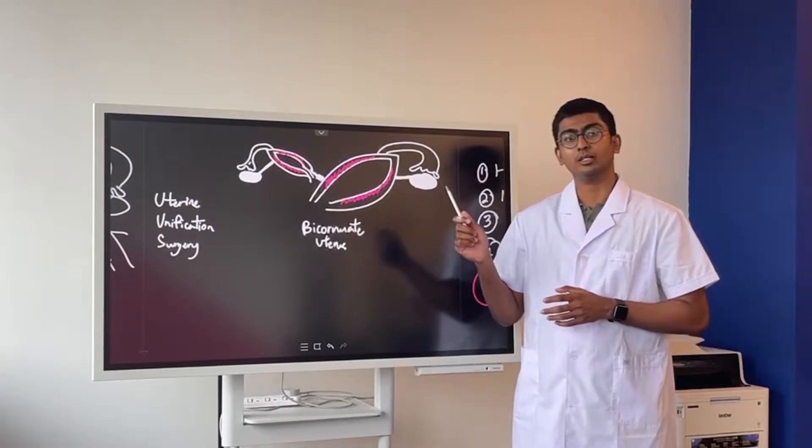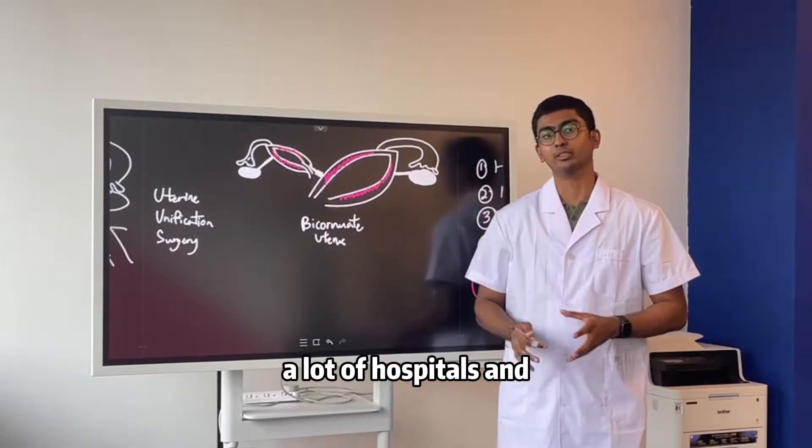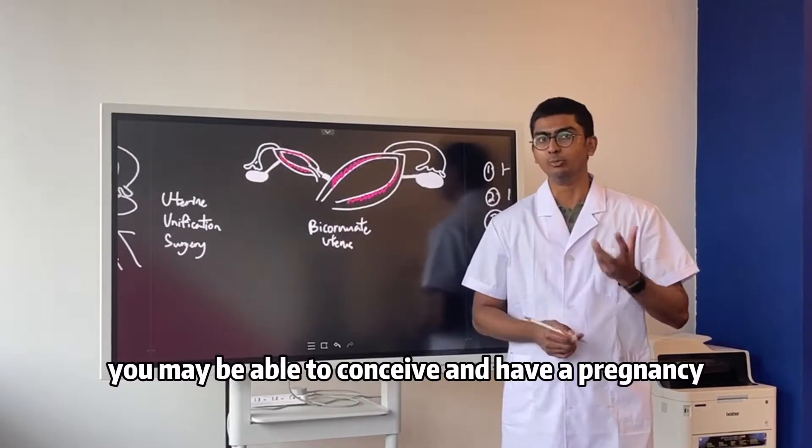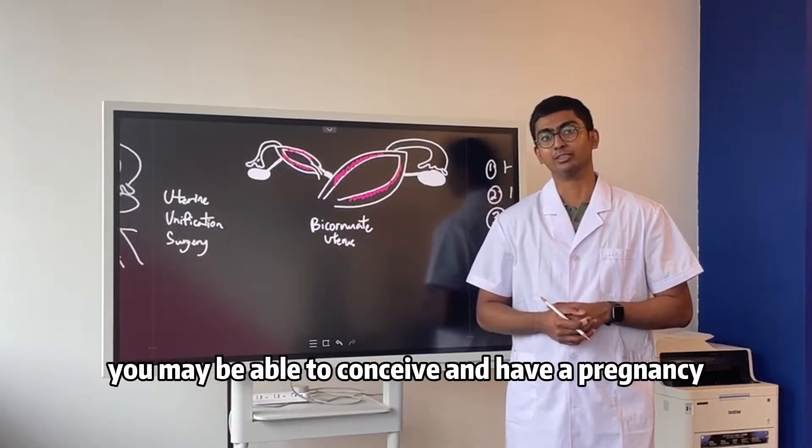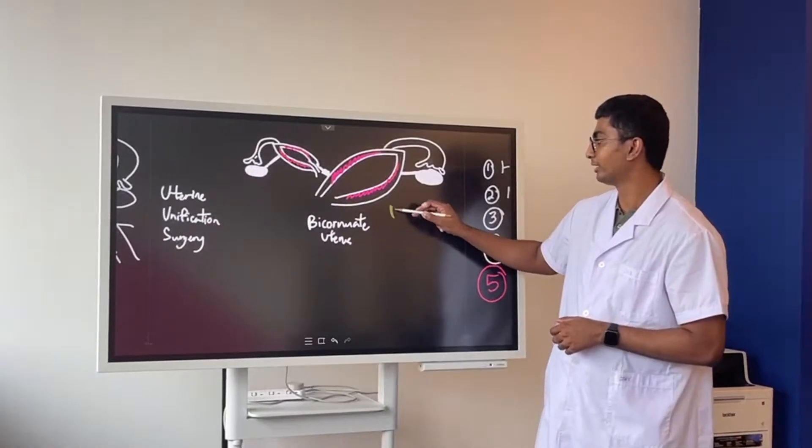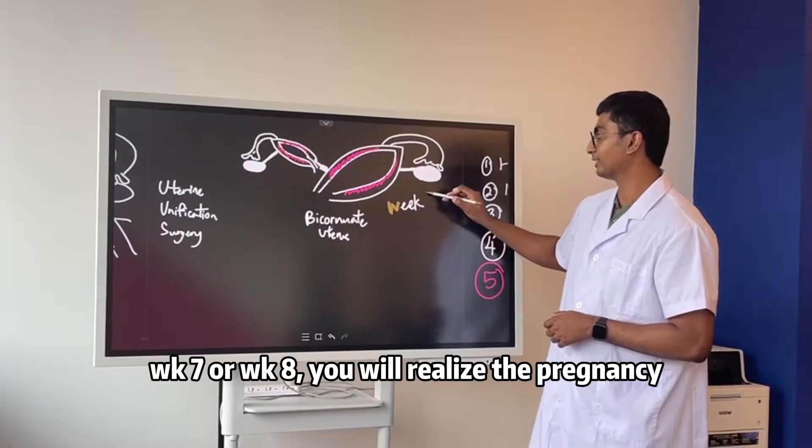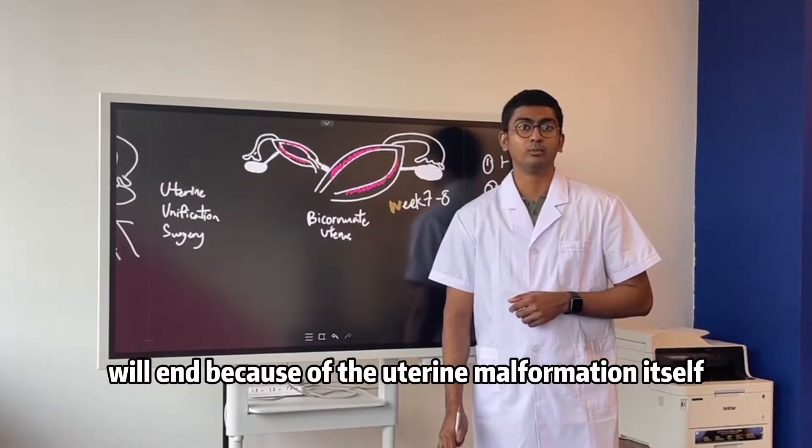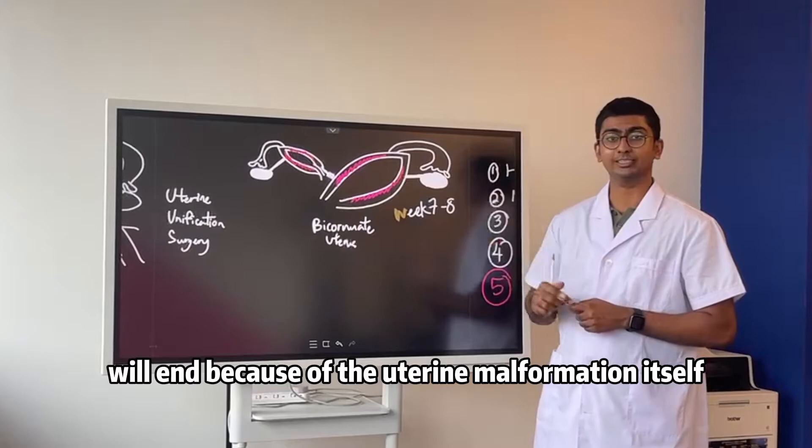Now these types of uterine malformations, a lot of hospitals and doctors will recommend you to go for IVF or IUI. And then yes, indeed you may be able to conceive and have a pregnancy, but you will realize upon week 7 or week 8, you will realize the pregnancy will end because of the uterine malformations itself.